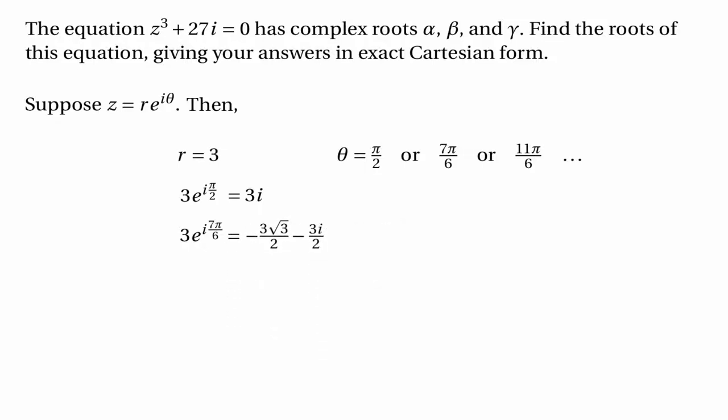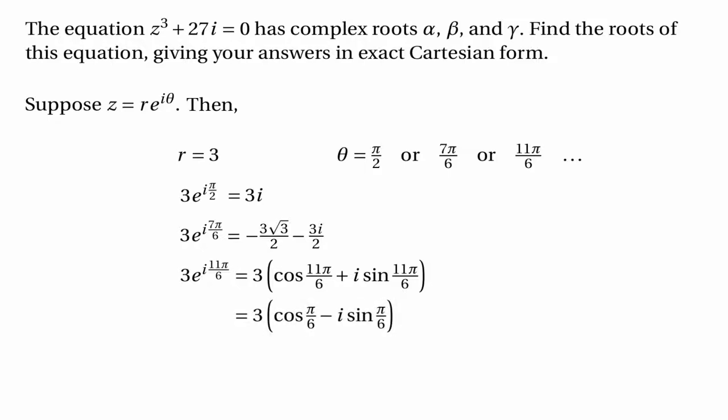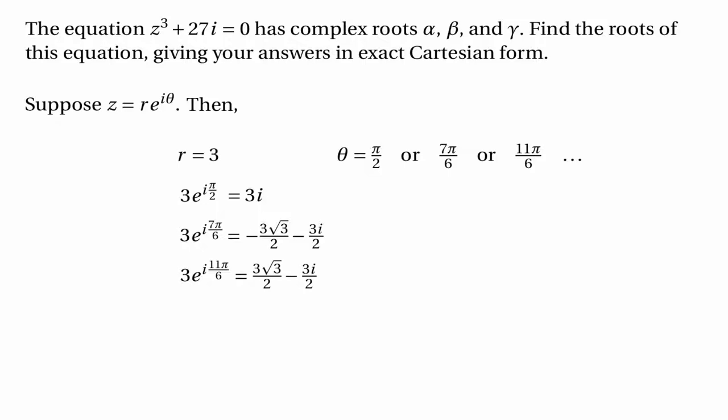So that's the second possible value of z. The third possible value comes from taking θ equals 11π over 6, giving 3e to the i 11π over 6, which can be written as 3 times cos(11π/6) plus i sin(11π/6), or 3 times cos(π/6) minus i sin(π/6), which turns out to be 3√3 over 2 minus 3i over 2. So here are the three possible values of z in exact Cartesian form, and alpha, beta, and gamma are these three numbers in some order.